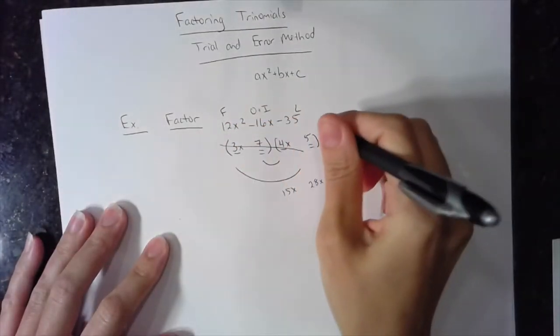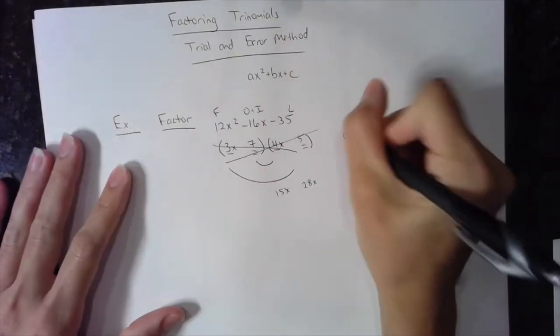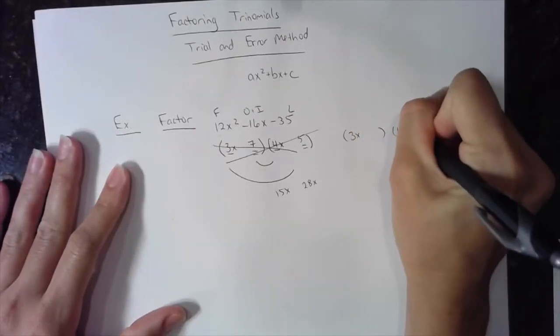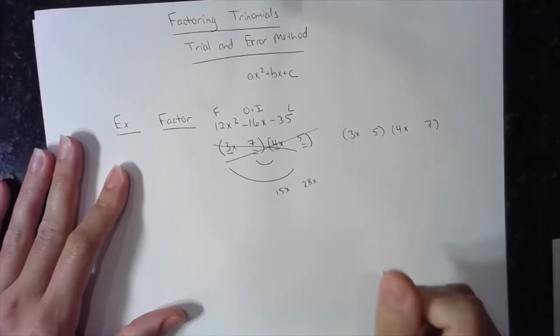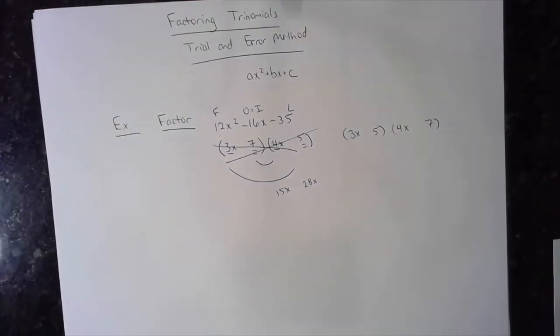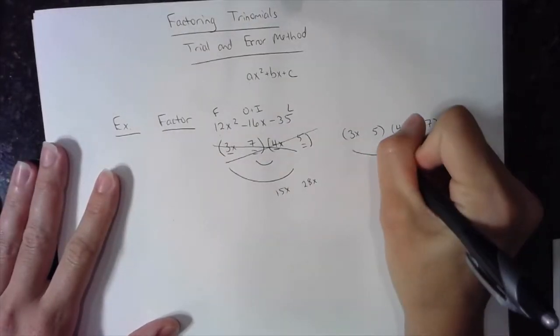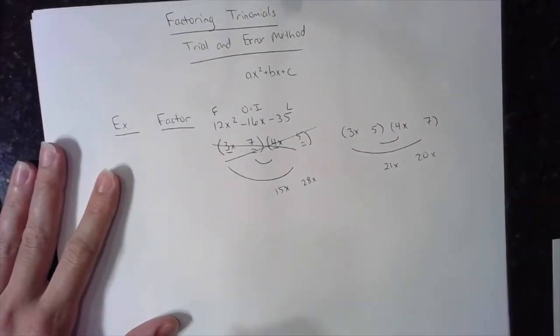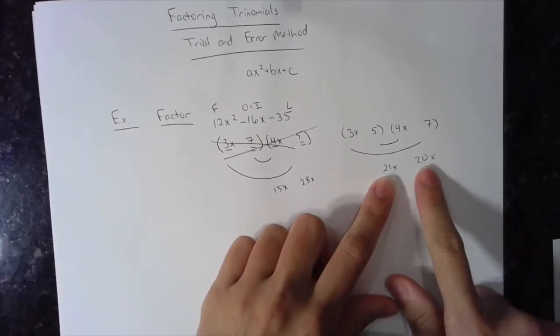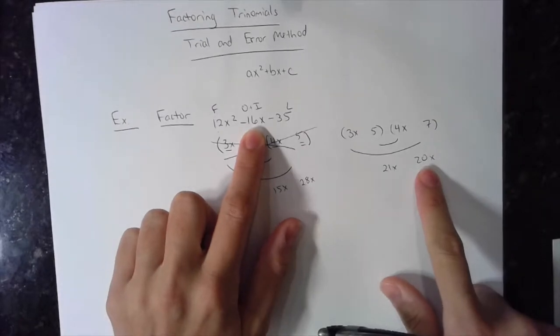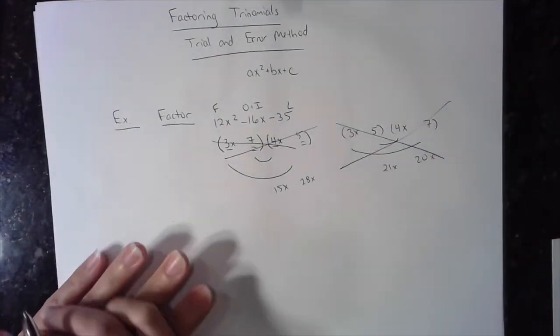Now I'm not going to change all my numbers. I'm still going to try a 3x and a 4x, but I'm going to switch and put the 5 here and the 7 here. Is that going to change anything? Of course. Now my outer is 21x and my inner is a 20x. But is 21 and 20 in any way going to give me a 16 regardless of the sign? No. This guy's out.